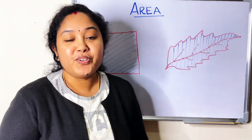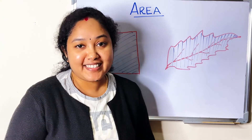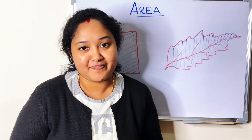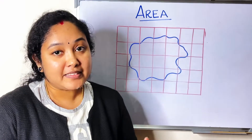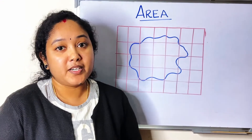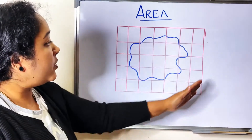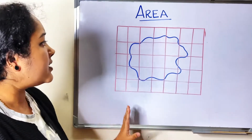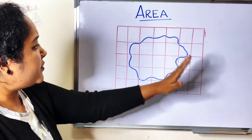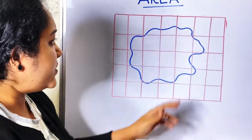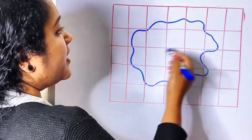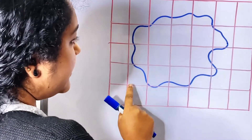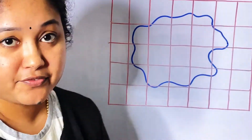First we discuss the area of an irregular shape. To find the area of an irregular shape, place it on a square or graph paper. Then look at the picture — some squares are completely enclosed, some are half filled, some less than half, and some more than half.